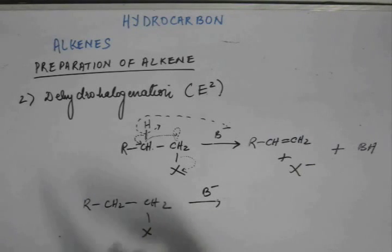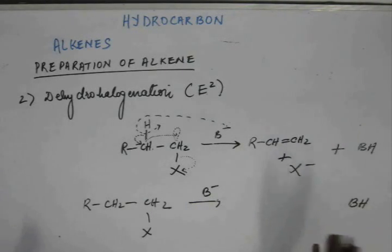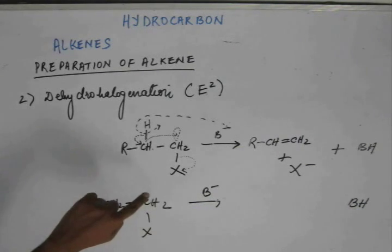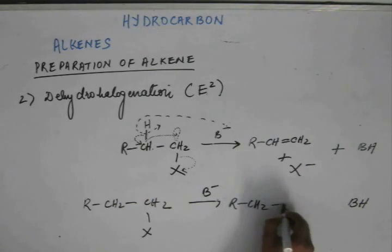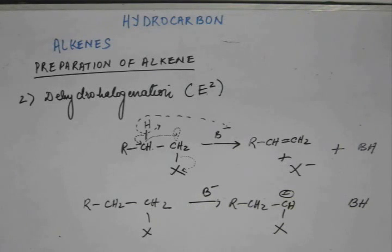Suppose this other hydrogen is abstracted. BH comes out, and if the base abstracts hydrogen from this carbon, then this carbon will get a negative charge. Now this carbon, since it has a negative charge, cannot dispel off this hydrogen, and this carbon has no way to get rid of its negative charge.